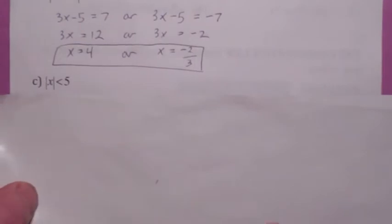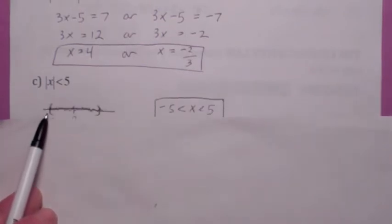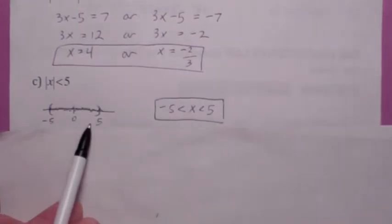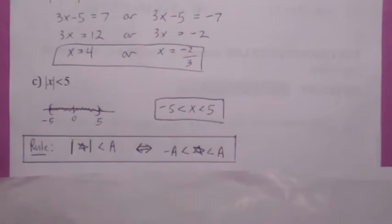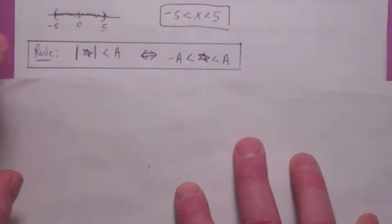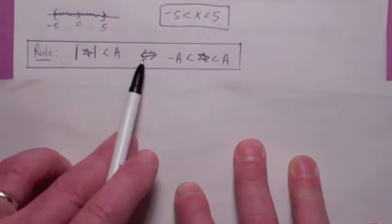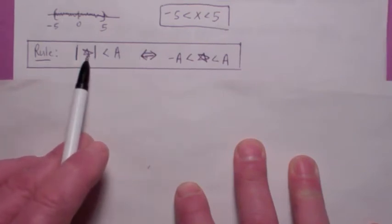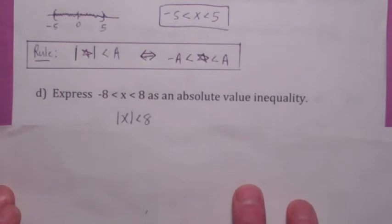Now when you get to an absolute value inequality, it's the same idea. This is saying that the distance that x is from zero is within five units. And what that means is x can be anywhere from negative five to five. So the solution to this absolute value inequality would be negative five less than x less than five. The basic rule — here's the key idea for the whole video: when you have the absolute value of something less than a number, that means the same thing as saying what's inside is between the opposite of the number and the number. We're assuming a is greater than zero.